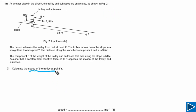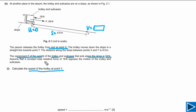For part B1 we need to find the speed of the trolley at point Y. The trolley starts from rest at point X, and the displacement from X to Y is 9.5 m. The component F of weight acting along the slope is 54 N, and the constant resistive force is 18 N opposing motion. First we calculate acceleration: a = F_net / m.